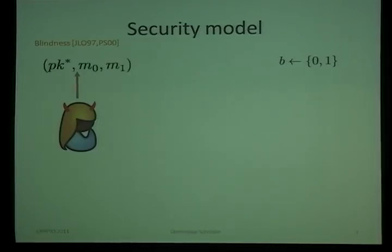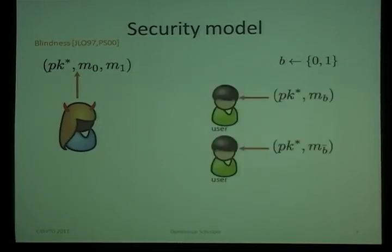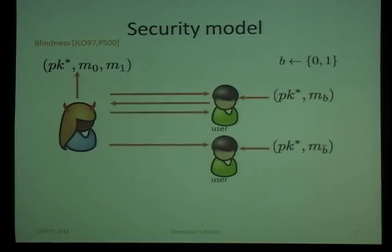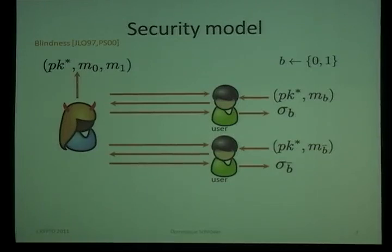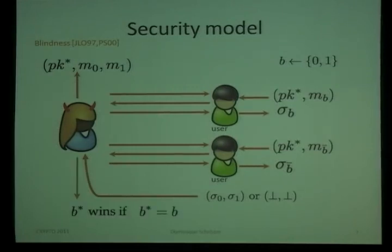In the blindness game, we first flip a bit. The signer then outputs a — possibly maliciously generated — public key and two messages. Then two user instances are executed on the message and the public key. The adversary completely schedules the interaction of the protocol, and the user tries to compute the signature. If both signatures verify, they are given to the signer; otherwise he receives a bot symbol. He then tries to predict the bit B. Note that this definition does not fully account for aborts — if some party aborts, the signer is not informed which one, even if the protocol takes 10 rounds.